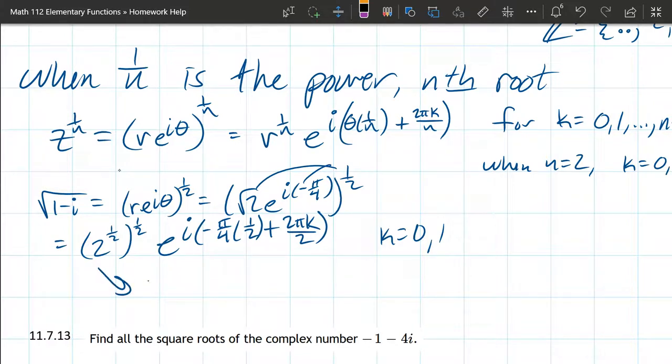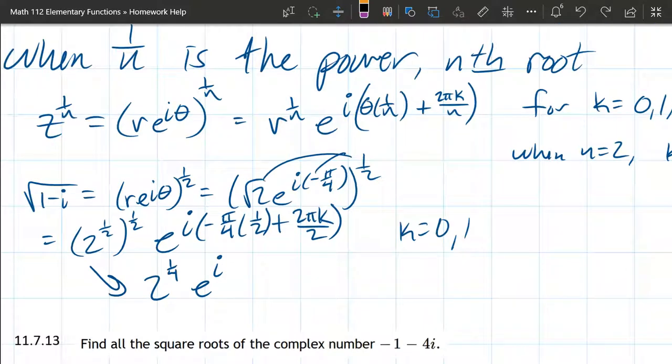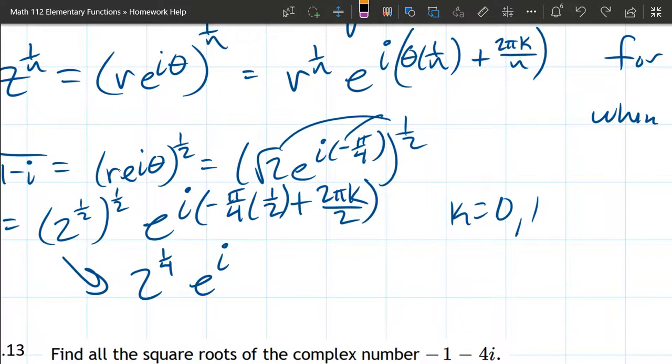So 2 to the half to the half is 2 to the 1 fourth. You're multiplying powers. E to the i. When k is 0, that whole second part just drops off. We do get negative pi over 4 times 1 half is negative pi over 8. So this is going to be our first root.